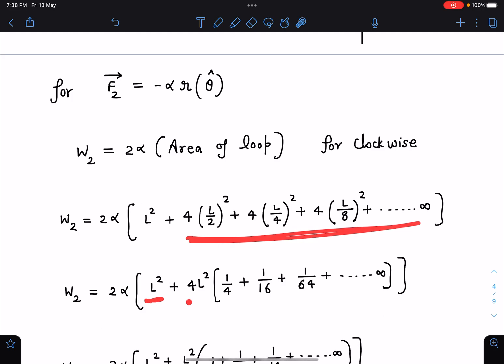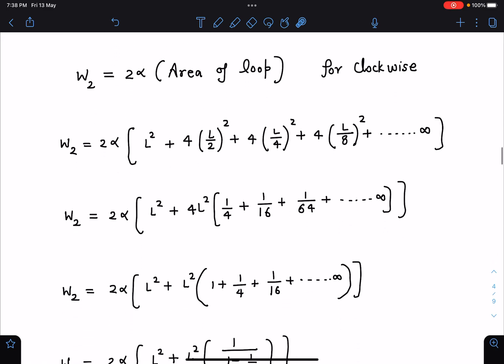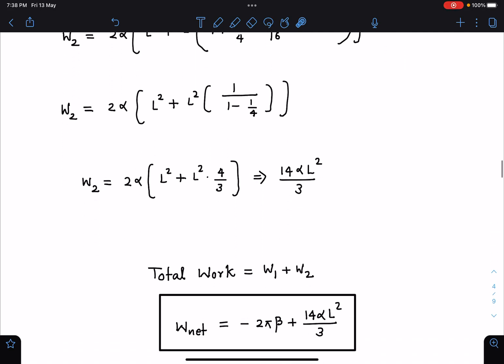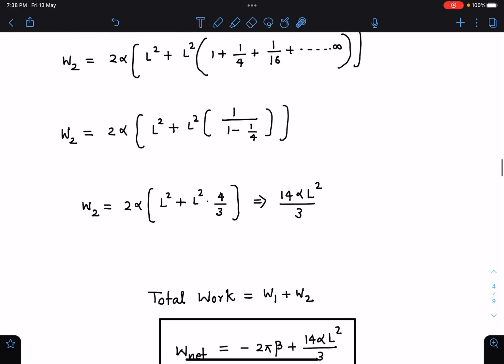Leave this first term and take these terms till infinity. I am not explaining the calculation, just I will take you to the final step. When we simplify this we are getting W2 as 14 alpha L squared by 3. So total work done by this force which is mixed of two magical forces becomes W1 plus W2, and the value becomes minus 2 pi beta plus 14 by 3 alpha L squared. And this is going to be the final answer for this problem.